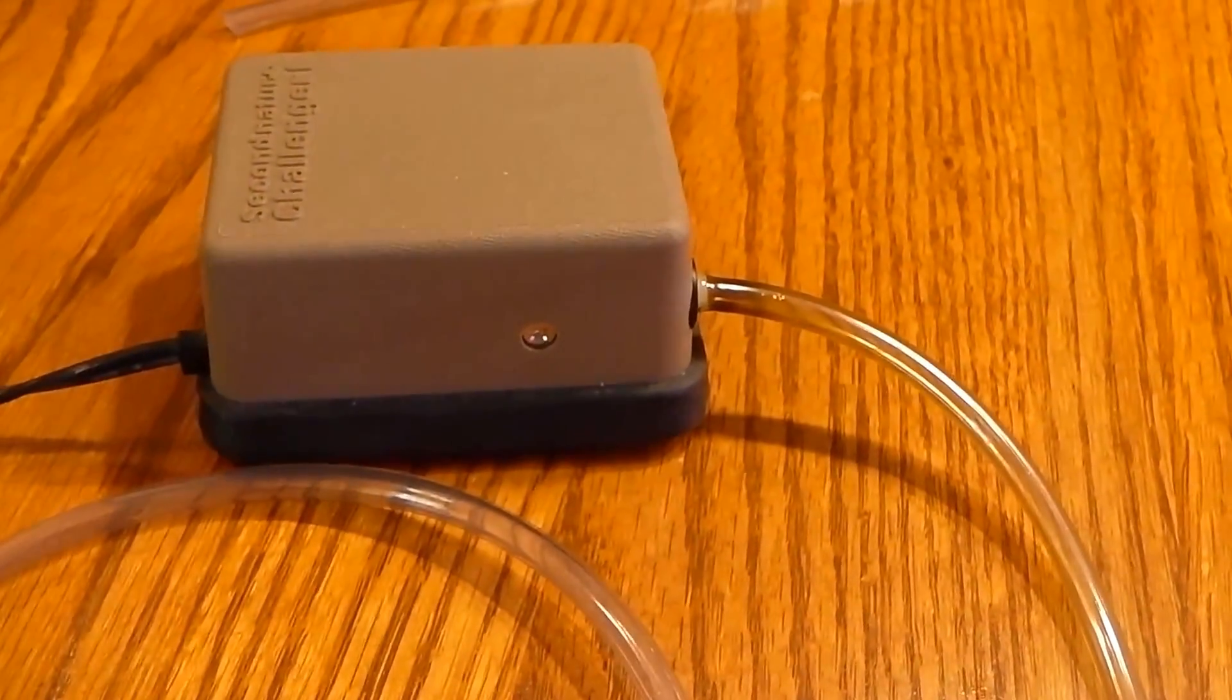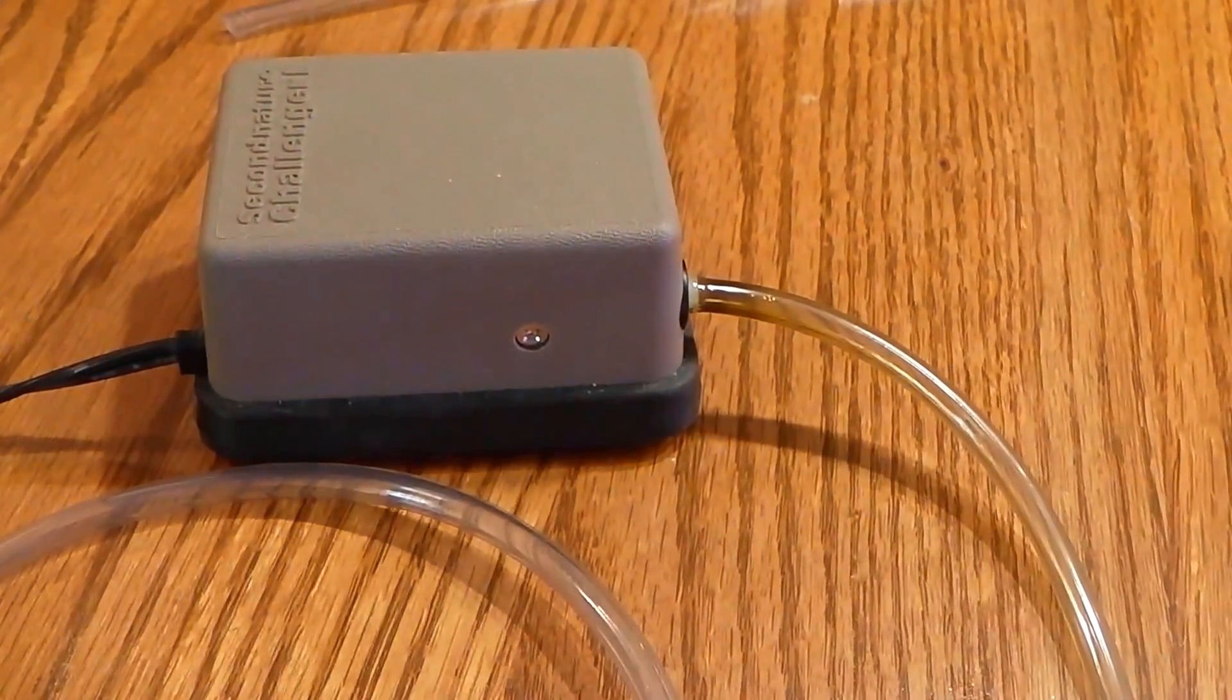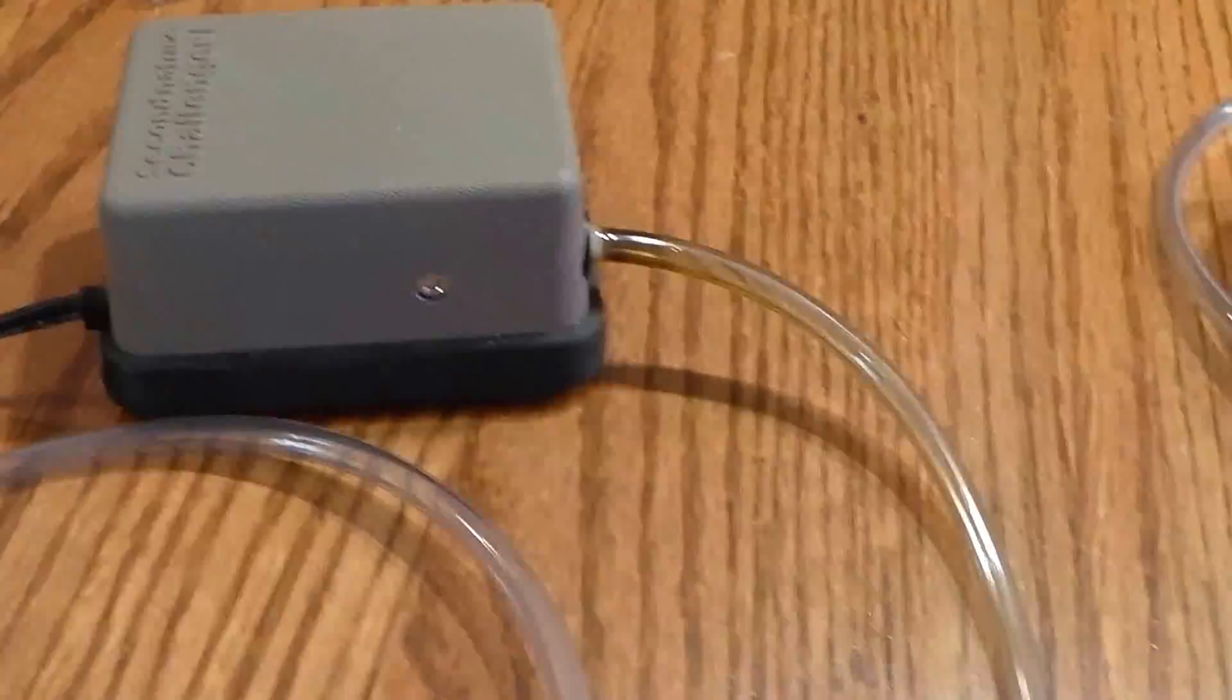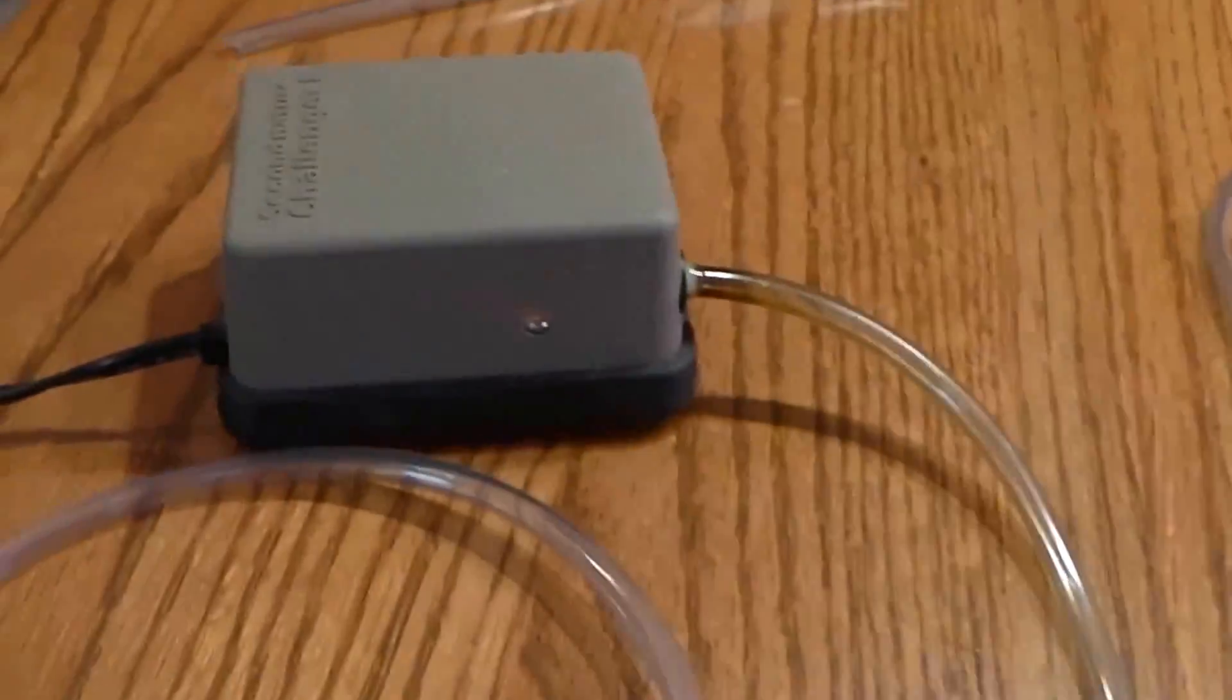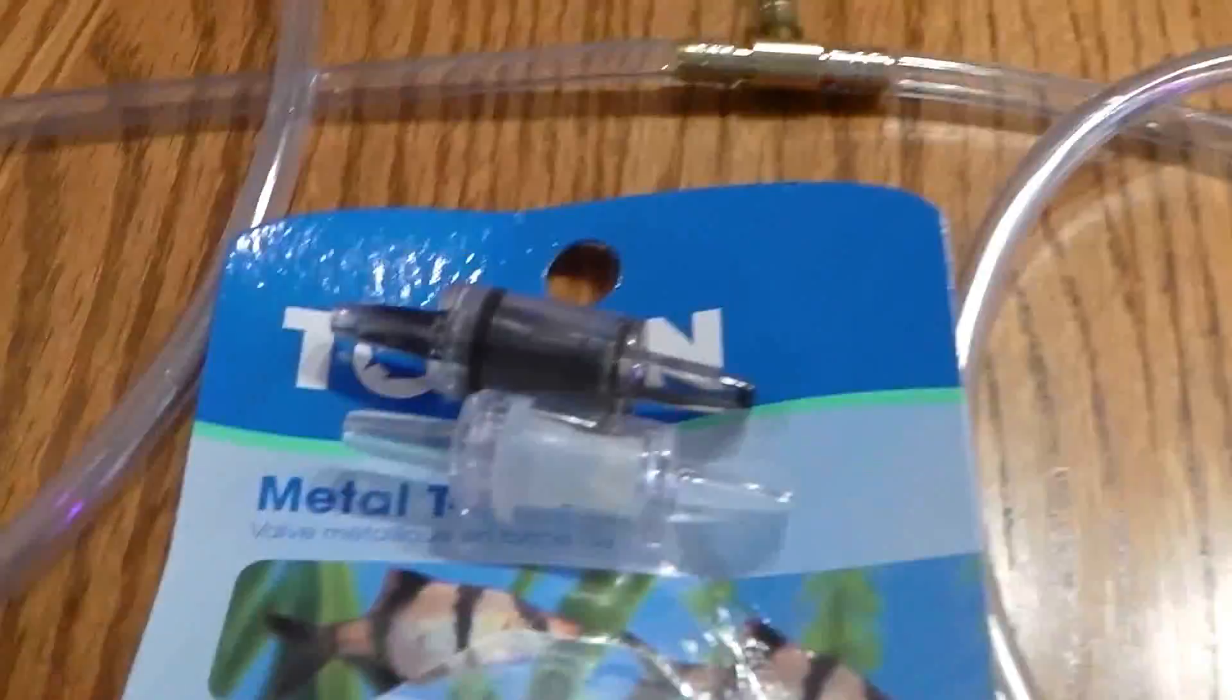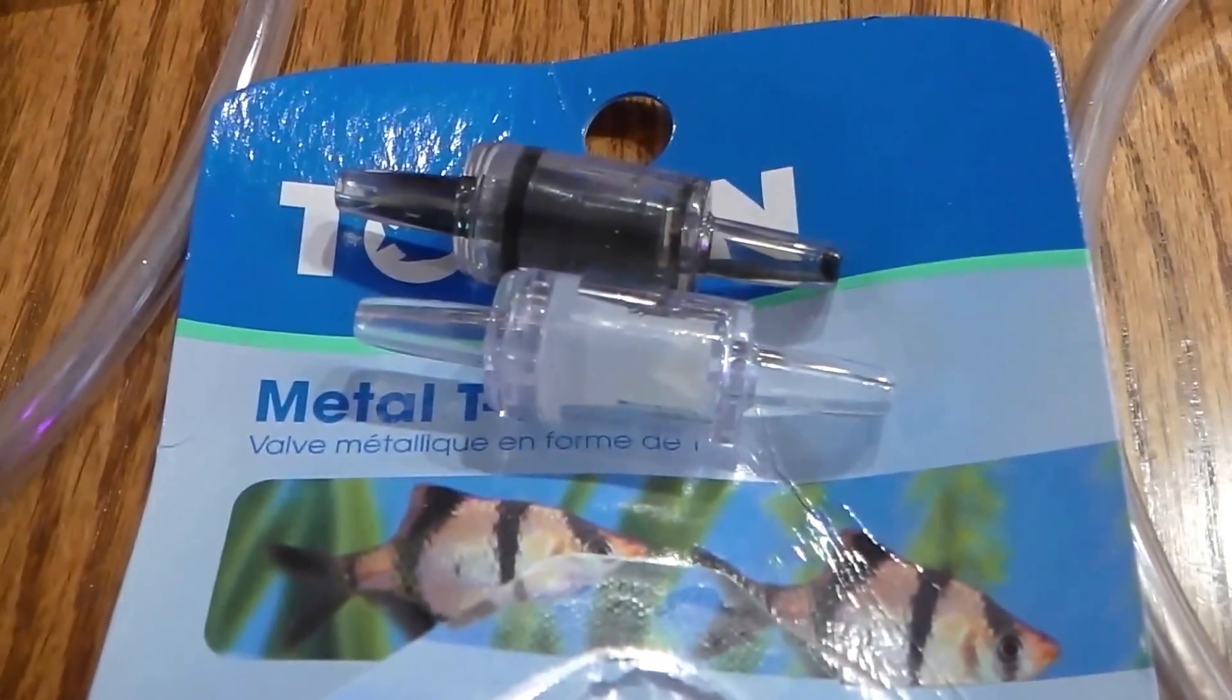And if you don't want to use those, make sure that you keep your air pump higher than where your reservoir is on your AeroGarden. That will prevent the siphoning also. But since we're going to be having our air pump at the same level as our reservoir, we're going to go ahead and use these check valves.